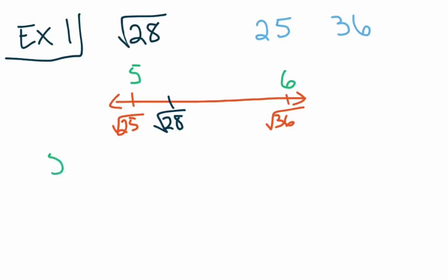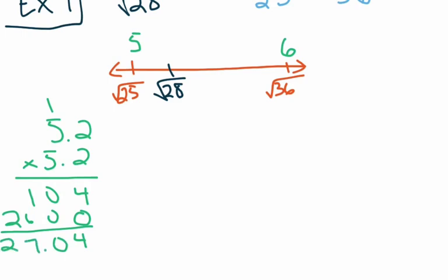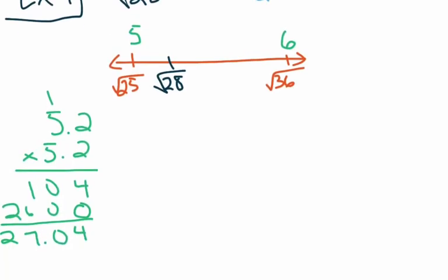So if I take 5.2 and square it — meaning I multiply 5.2 by itself — I need to do two-digit multiplication. 2 times 2 is 4; 2 times 5 is 10. Bring down a 0 for a place value holder. 5 times 2 is 10, carry the 1; 5 times 5 is 25, plus 1 is 26. Adding those up I get 27.04. Now 27.04 is smaller than 28, so I need at least two guesses for every problem, and my next guess needs to be bigger than 5.2.